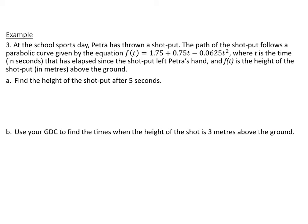In this example, Petra is throwing a shot put, and the path is parabolic — quadratic, not cubic. The function is f(t) = 1.75 + 0.75t - 0.0625t², where t is time in seconds and f(t) is the height. We want to find the height after 5 seconds and use the graphing calculator to find the times when the height is 3 meters above the ground. Go ahead and pause the video and try this one.